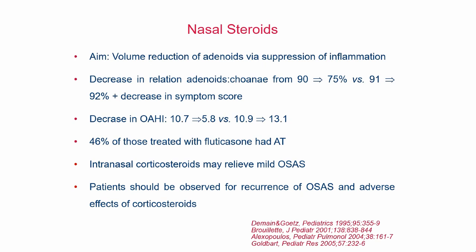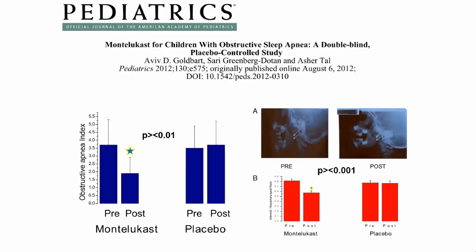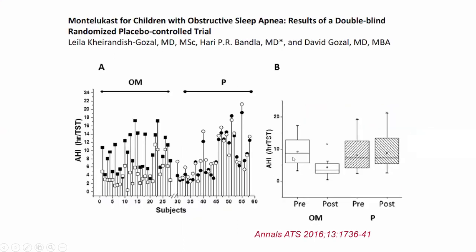Another anti-inflammatory option was montelukast, as children with OSA show increased systemic leukotrienes in adenotonsillar tissue, urine, and sputum. Two randomized controlled trials showed decreased apnea-hypopnea index in children using montelukast compared to placebo. However, there is now an FDA black box warning for montelukast because of behavioral side effects, so its use in children with OSA remains to be determined.